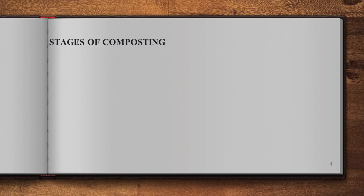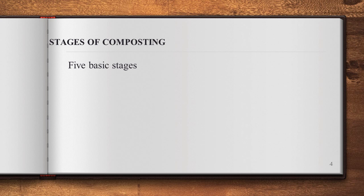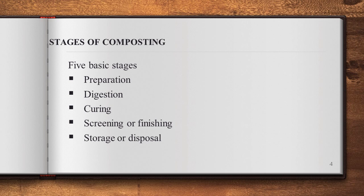The stages of composting — there are 5 stages. The first is preparation, which includes sorting, shredding, grinding, and pulping. The second stage involves mesophilic microorganisms carrying out the initial decomposition at a temperature of around 40 degrees.